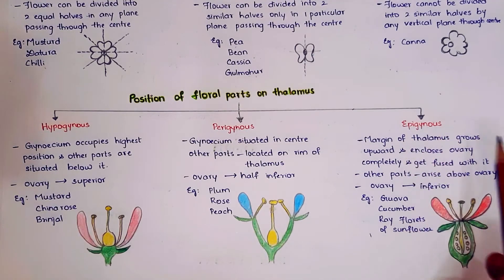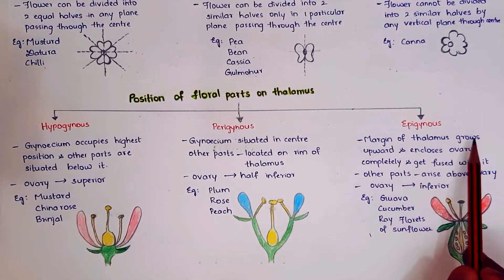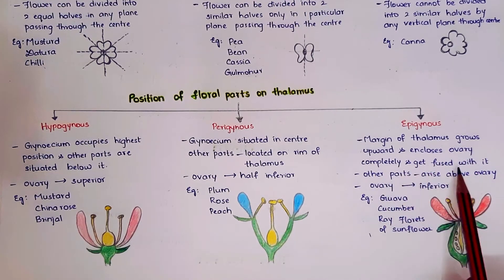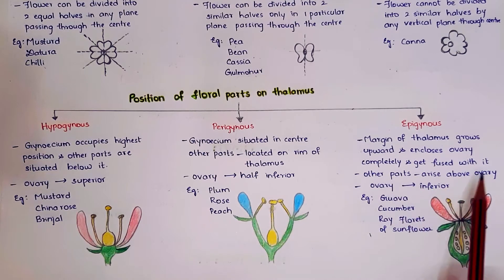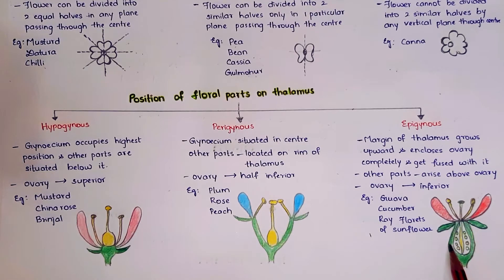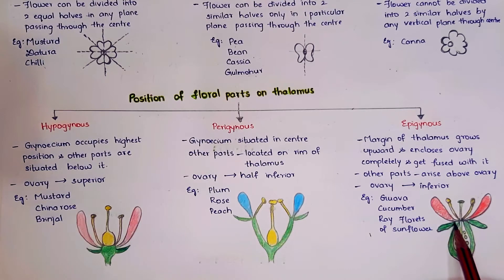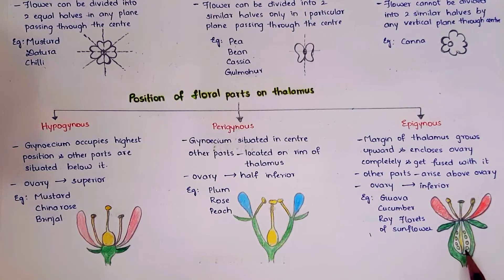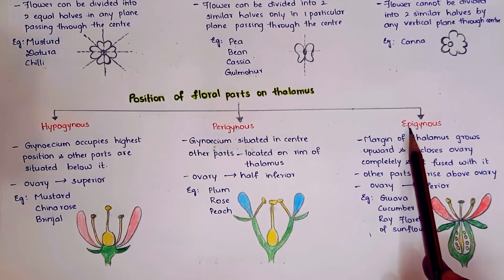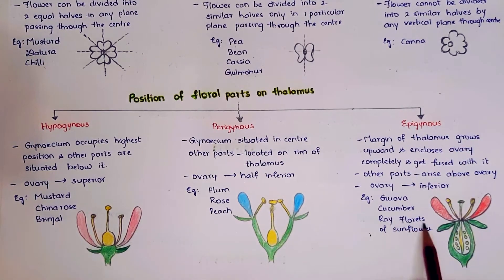Coming to epigynous: the margin of thalamus grows upward and encloses the ovary completely and gets fused with it. Other parts — sepals, corolla, and androecium — arise above the ovary. The ovary is present inferior to the other parts, so it is called inferior ovary. Examples of epigynous are guava, cucumber, and ray florets of sunflower.